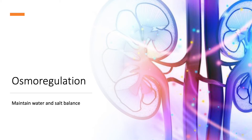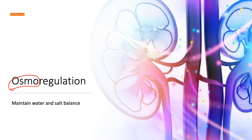Today our topic is osmoregulation. If we just break down that word, 'osmo' reminds you of osmosis, which deals directly with the movement of water across a semi-permeable membrane. Cells have these semi-permeable membranes, so we're talking about the movement of water and the salt balance occurring within that fluid. The term osmoregulation is just dealing with maintaining a healthy or homeostatic water and salt balance in a living system.